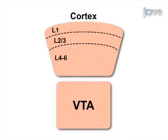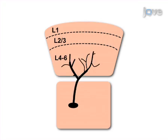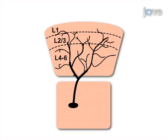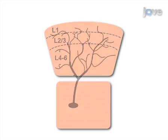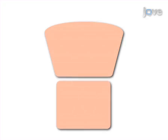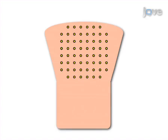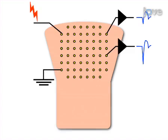The midbrain slice provides developmentally important dopaminergic inputs to the cortex. As a second step, the cortex-midbrain co-culture is grown on a multi-electrode array, which allows for multi-site stimulating and recording of neuronal activities in the culture.